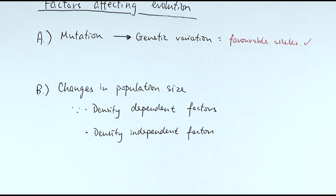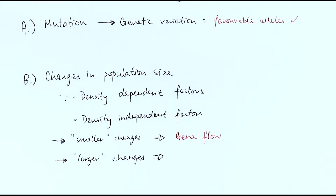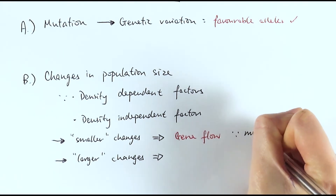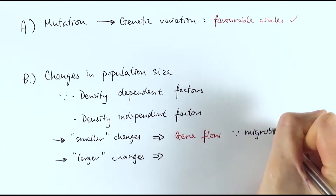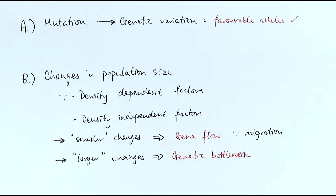Depending on how big a change the population size experiences, it could lead to slightly different outcomes. If there is a smaller change in the population size then it could lead to gene flow, which is simply about how alleles move from one place to another. Usually gene flow occurs because of things like migration — for example, birds undergo seasonal migration going from one place to another.